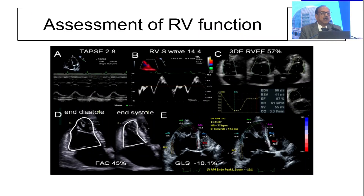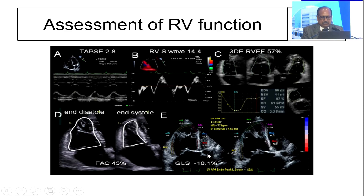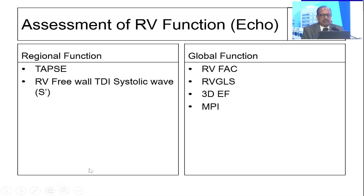The answer is: how do we assess RV in 2025? We have many factors — TAPSE, RV free wall TDI, three-dimensional ejection fraction, fractional area change, and GLS. Regional function is assessed by TAPSE and RV free wall TDI; global function is assessed by RV fractional area change, GLS, 3D ejection fraction, and myocardial performance index.